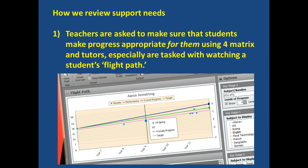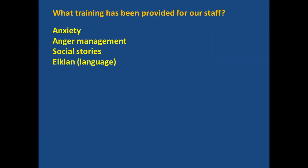We review support needs — teachers are asked to make sure that students make progress appropriate for them using a program called 4Matrix, and tutors are tasked with watching a student's flight path. You can see here that Aaron — who doesn't really exist — has a performance line shown in pink that is substantially underneath what you'd expect from the green line. At this point we would be looking at why his performance was underneath and seeing what we could do to intervene.